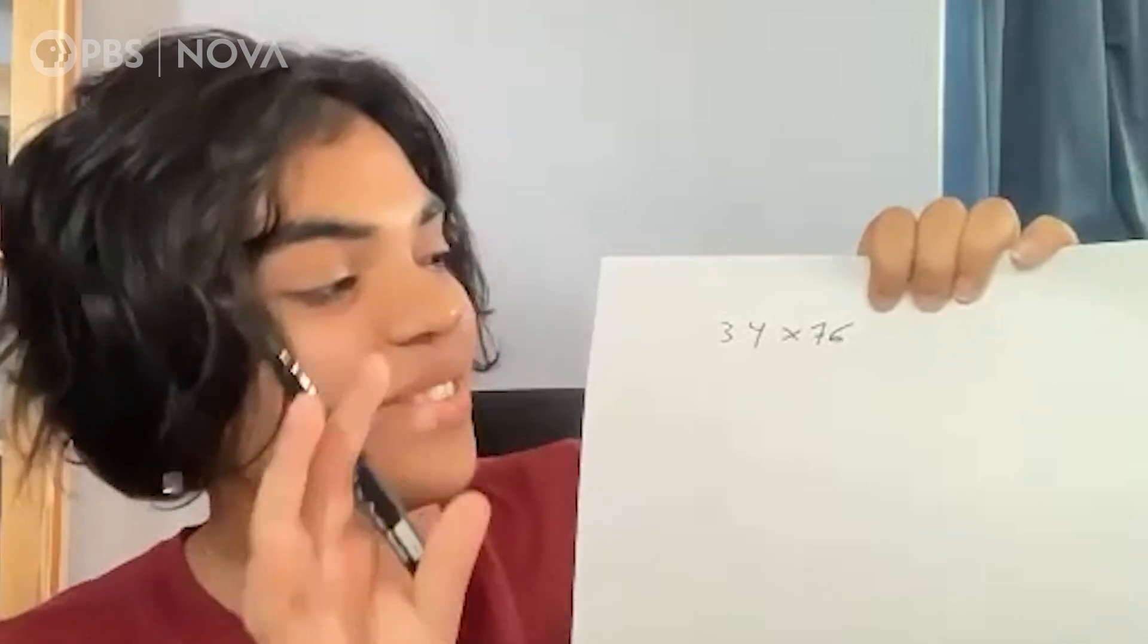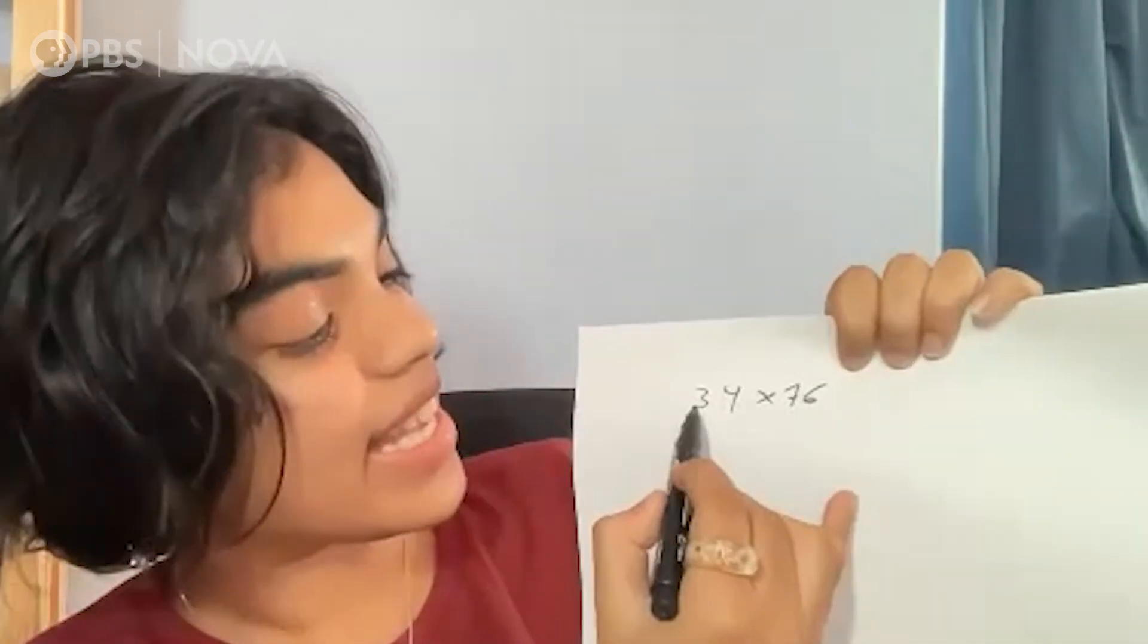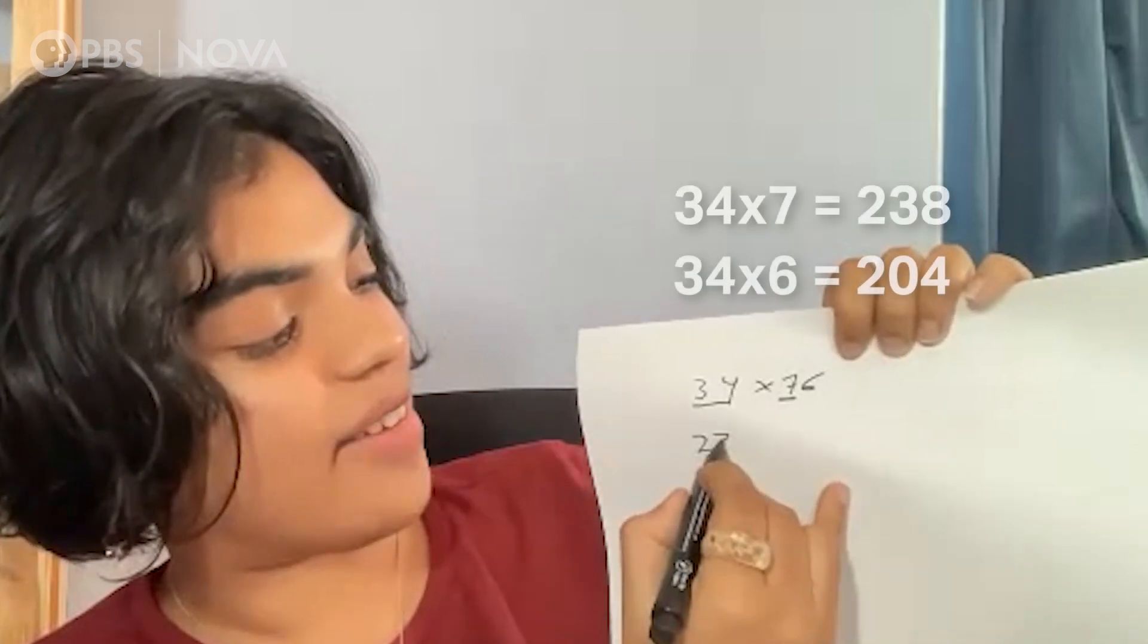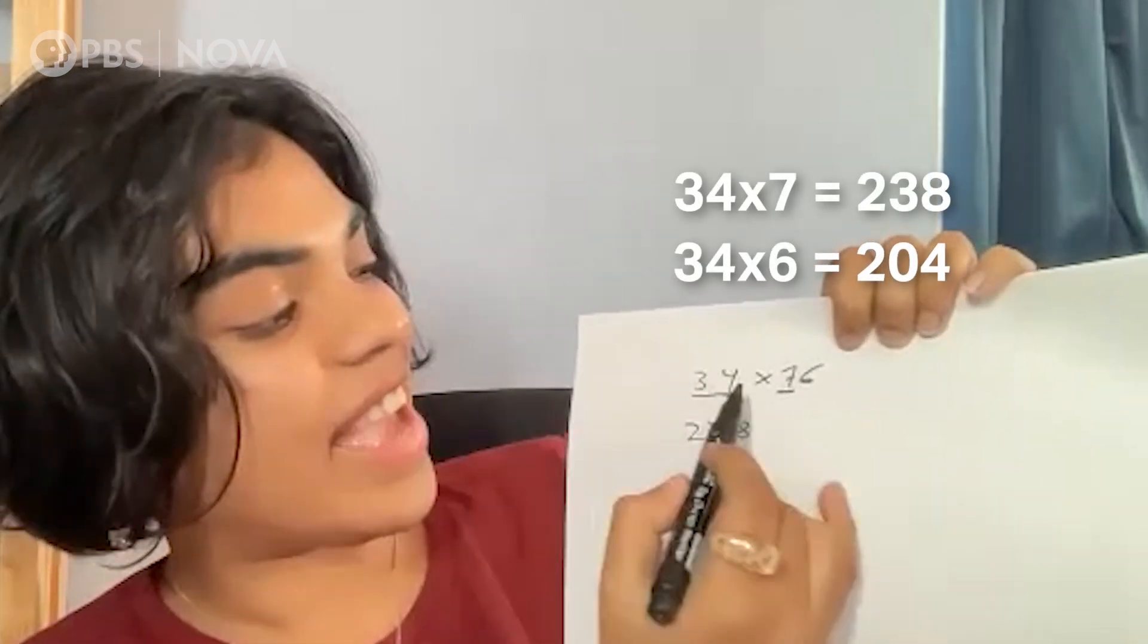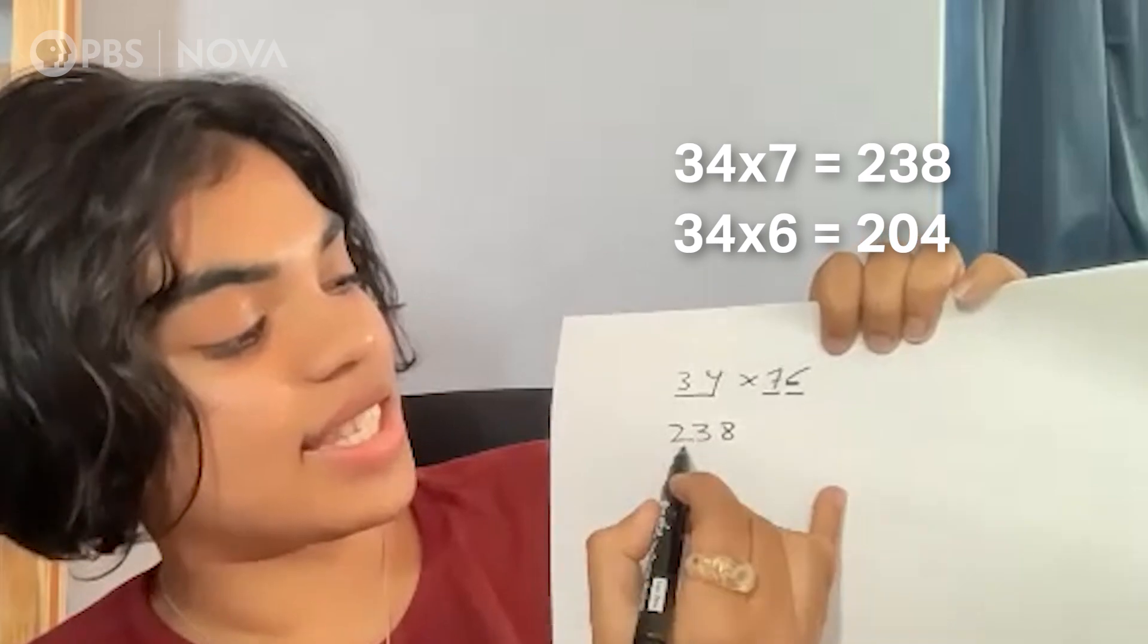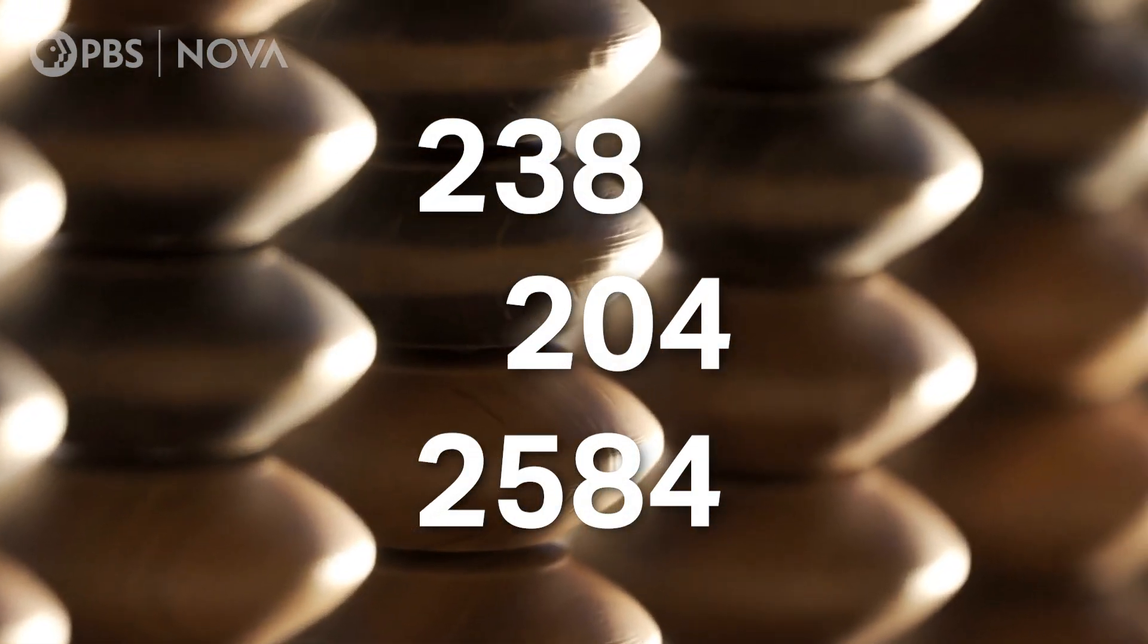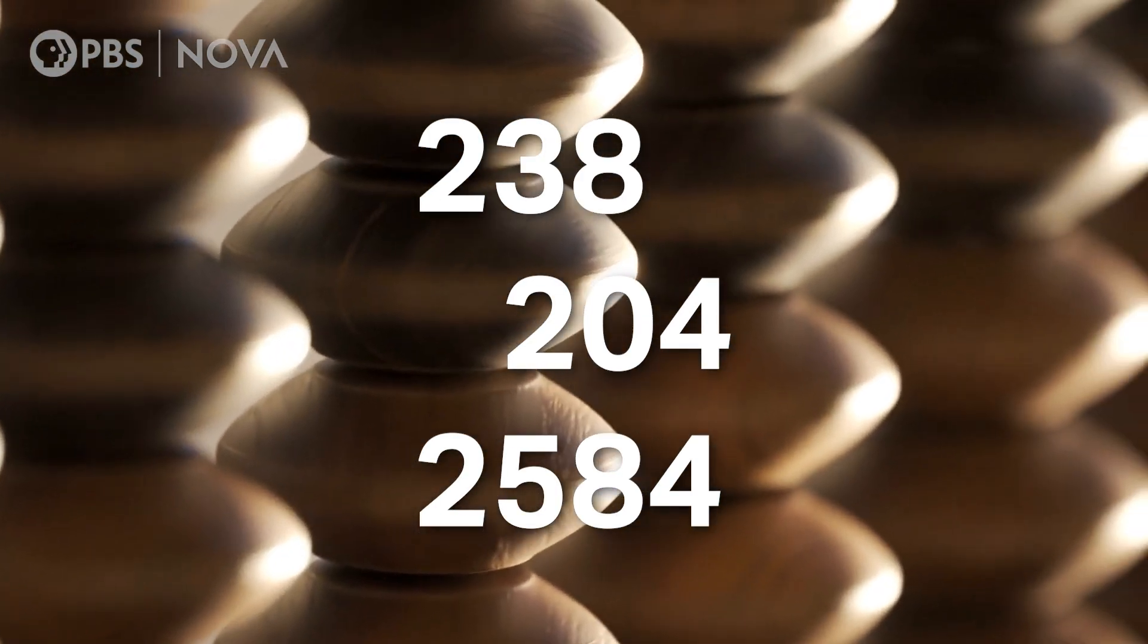So the way I did it is kind of similar to how you did it in school. I do the two-digit times this one digit first. And in my head, I have it as 238. And then I do 34 times 6. And then that's 204. And then I sort of use the abacus in my head. And that gives me 2584.